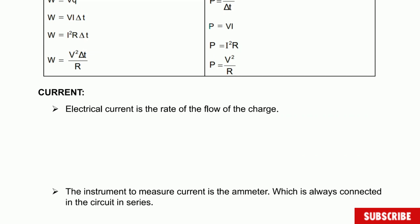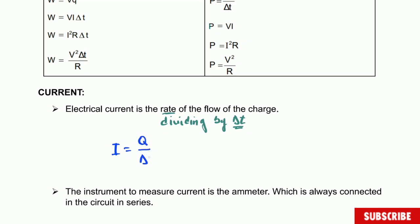We're going to start with the first important definition which is current. Remember, current is the rate of flow of charge. You need to remember that the word 'rate' means dividing by time. So we have that it is the rate of flow of charge — in other words, this formula can be written as I equal to charge divided by time. This is the definition for electric current in which I is the symbol for electric current.